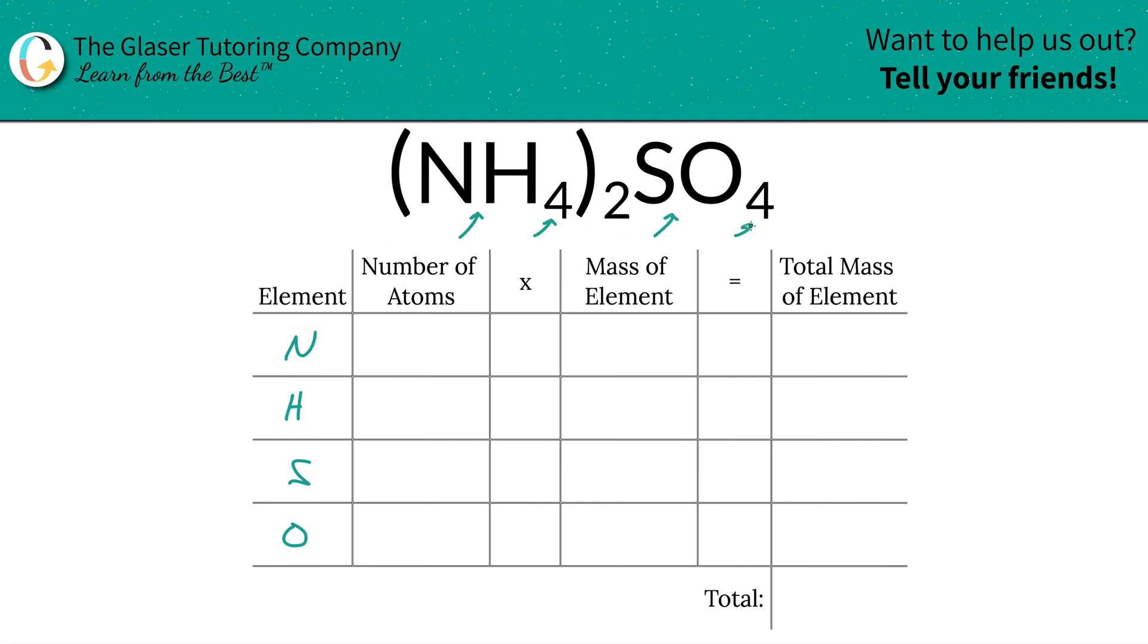Now at the bottom of every element you want to write in your subscripts. If you don't see one, for example there's a one on nitrogen and there's also a one on sulfur. So now to find the total number of nitrogens, you have to take the subscript of nitrogen and multiply it by the outer subscript outside those parentheses.